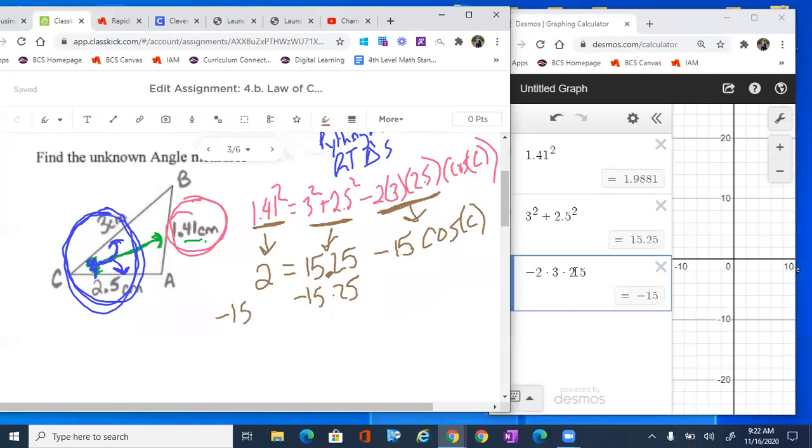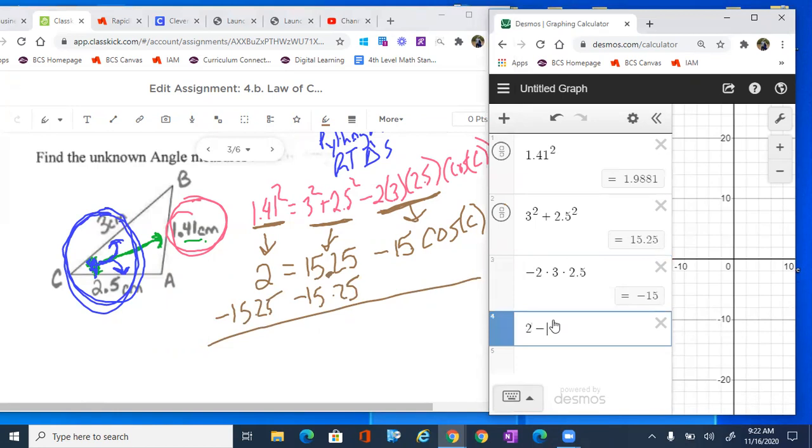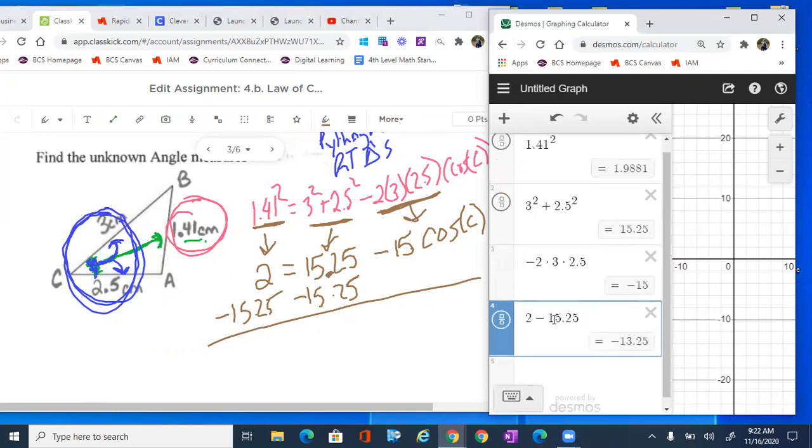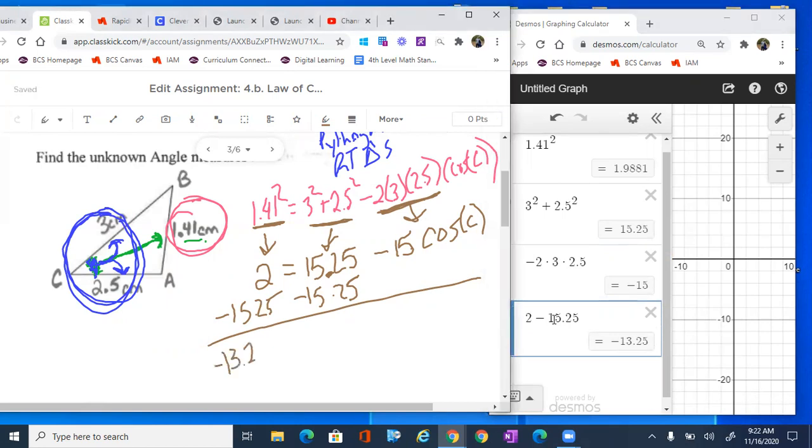And then after I subtract that 15.25, so I'm gonna take 2 minus 15.25. That's gonna give me negative 13.25 equals to negative 15 cosine of C.